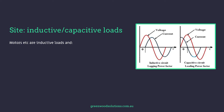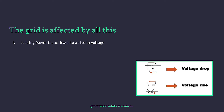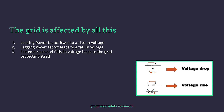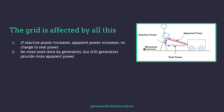On the site, if we have inductive and capacitive loads — motors etc. are inductive loads — the current lags the voltage, giving a lagging power factor. If capacitive loads, the current leads the voltage, hence a leading power factor. The grid is affected by all this: a leading power factor leads to a rise in voltage; a lagging power factor leads to a fall in voltage. Extreme rises and falls in voltage lead to the grid protecting itself. If reactive power increases, the apparent power increases as well, but there's no actual change in real power — no more work done by the generators, but still generators provide more apparent power.